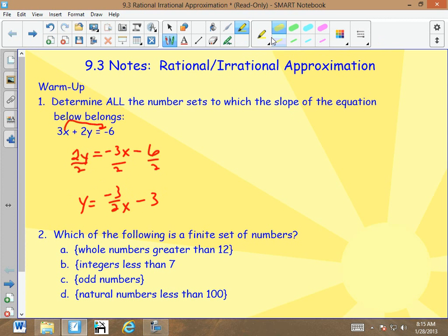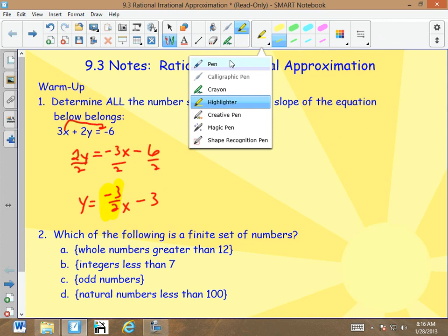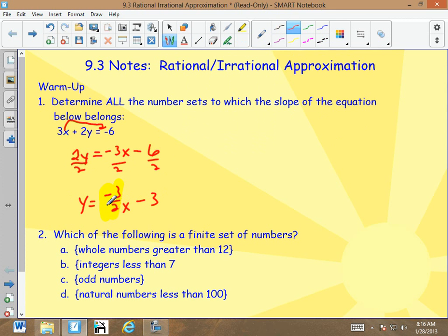Now all I have to do is determine the number sets that the slope belongs to. I have to make sure that I reduce the fraction. Now, negative 3 over 2 stays negative 3 over 2. It cannot reduce. So the number I'm looking at is negative 3 over 2. It is real because all numbers that we deal with are real. Can it be written as a fraction? Yeah, it is a fraction. So if it can be written as a fraction, it's rational.